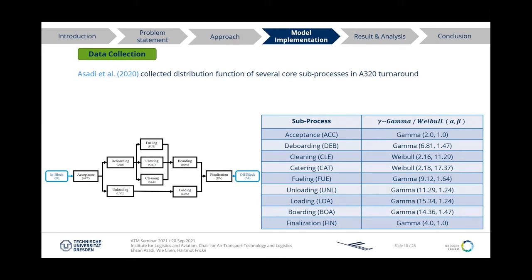For model implementation, the first step is collecting data from real situations. Here is a table of the probability density function of each core sub-process of a typical turnaround, derived from real data. Focusing on the main concept of the algorithm, we took the main activities common across different aircraft types: acceptance of aircraft, deboarding of passengers, unloading baggage, fueling, catering services, cleaning, boarding passengers for the next flight, loading baggage, and finally the turnaround finalization check and taxi out.